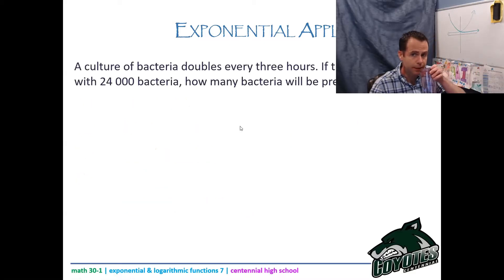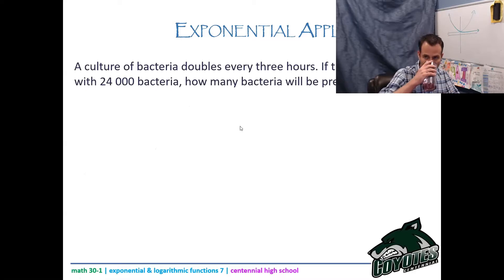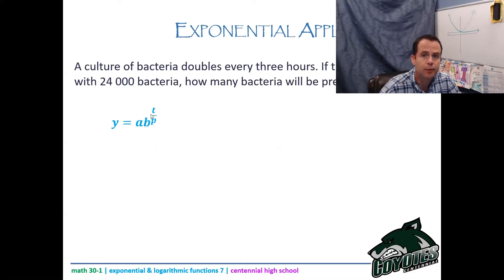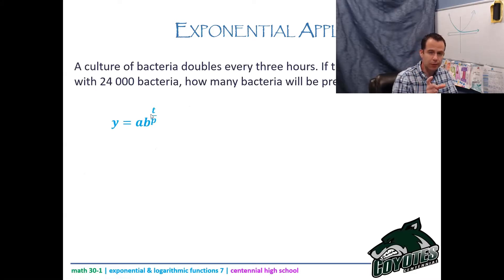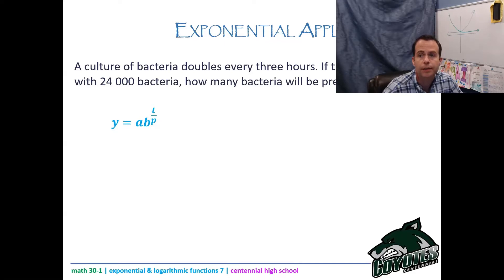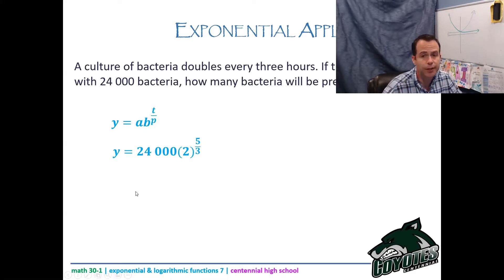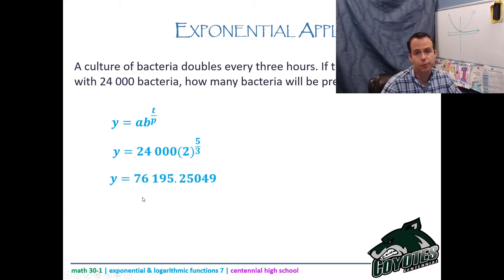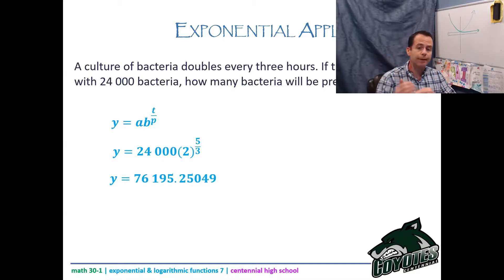Example: a culture of bacteria doubles every three hours. If the culture began with 24,000 bacteria, how many will be present in five hours? Initial population a = 24,000, rate b = 2 (doubling), period p = 3 hours, total time t = 5. Plug it all in and you get 76,195.25.